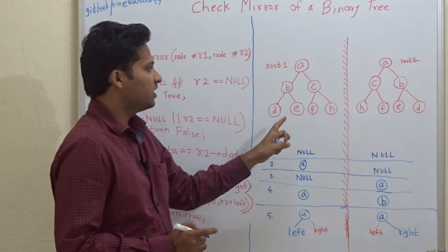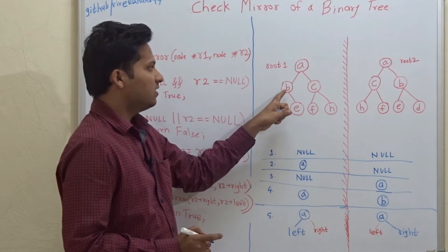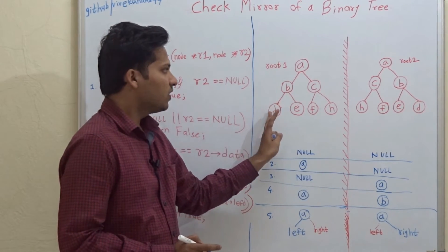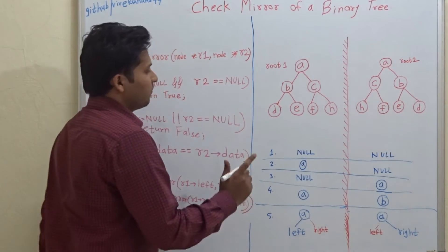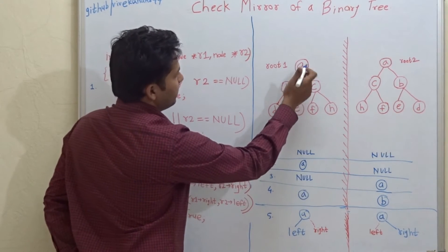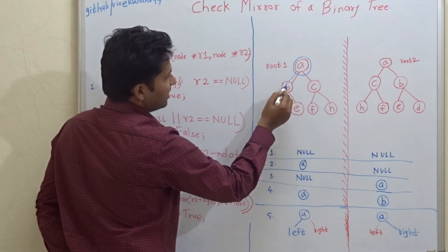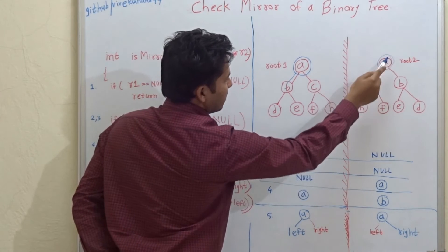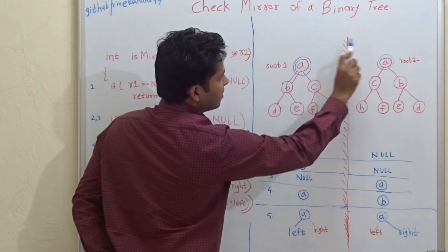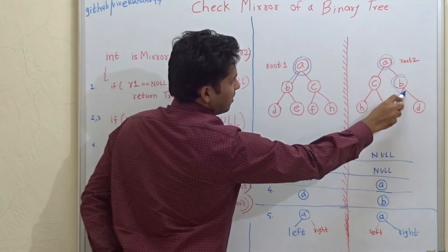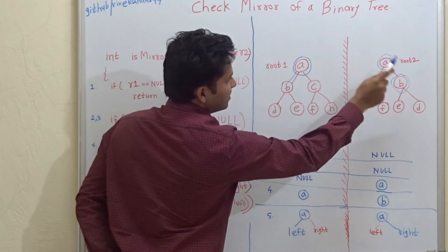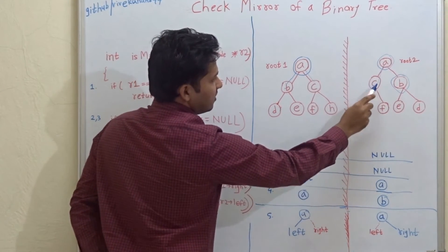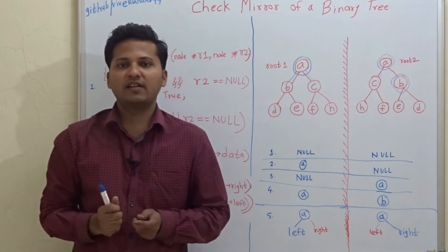I will tell you the definition. For every node in a tree, in its mirror, the left child will be the right child. For example, for node A, its left child is B, and in the mirror of this tree, for A, this left child has converted to its right child. The left child is right child here, and the right child C is left child here. That is the mirror of a binary tree.